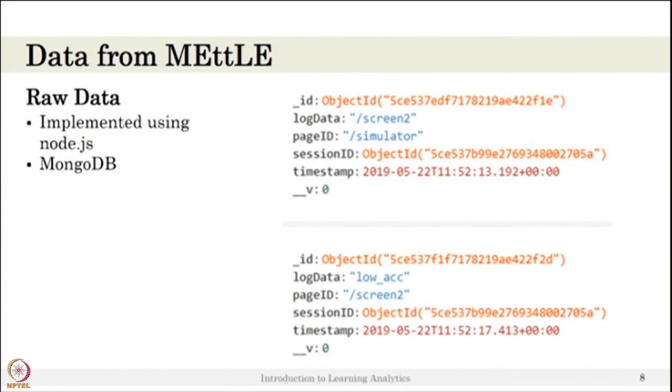If you arrange this log data in time-sequential order and analyze it, we can recreate the scenario the student went through: the student was in the qualitative model, asked for a hint, then went to the simulator, then to the second screen in the simulator, then to low accuracy where they changed something. We can even identify how much time is spent on each action. We need to record this rich data at a fine-grained level—the student's interaction with the system. Instead of recording every second, we record data based on events.